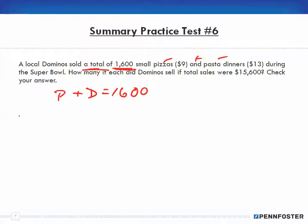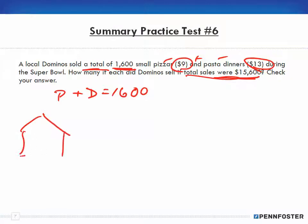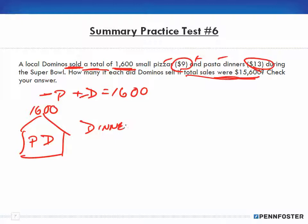Now, what's the relationship? The pizzas are at $9 and dinners are at $13. It's asking how many of each did Domino's sell if total sales were $15,600. When I first read this I was thinking the total was 1600, but because there are two totals, both can't be the same total. So I had to rethink what the problem was actually asking. Domino's had a total of 1600 sales — they sold pizzas and they sold dinners. I set dinners as D, which means pizzas has to be 1600 minus D.